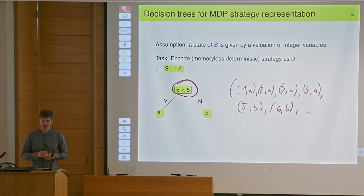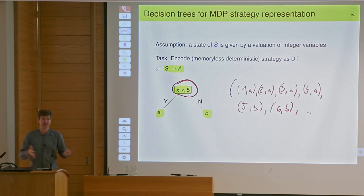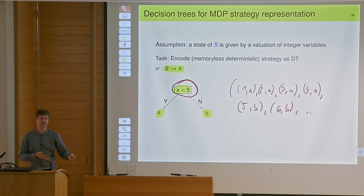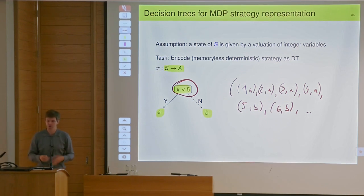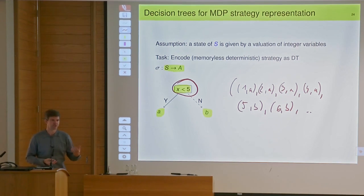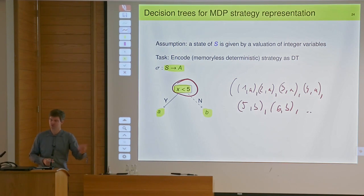Binary decision diagrams are pretty well known. One of their disadvantages is that they work on some bit representation of the state space — this is good for machines, but not good for us. We want to speak in terms of the objects that the programmer used while programming the system.